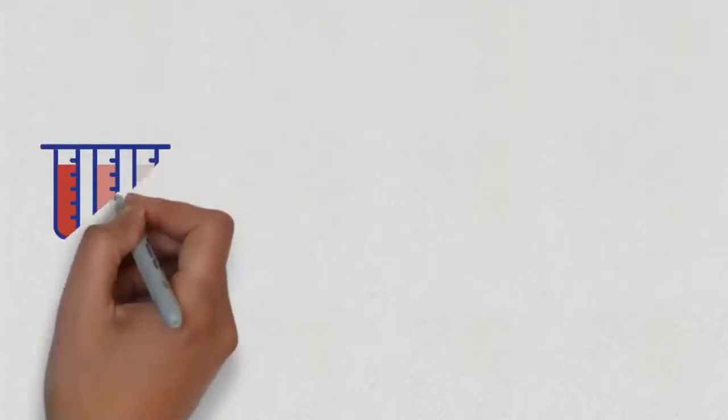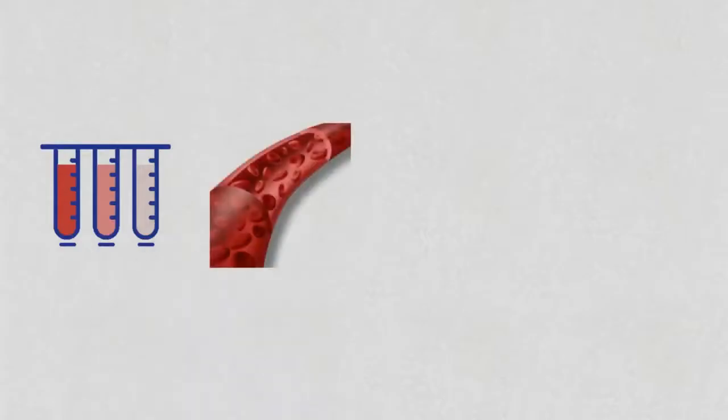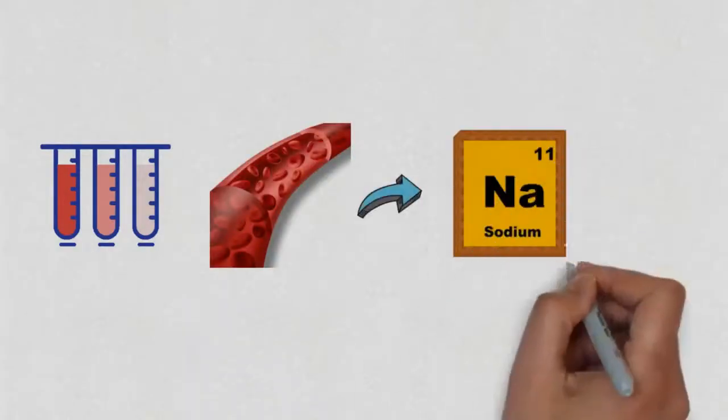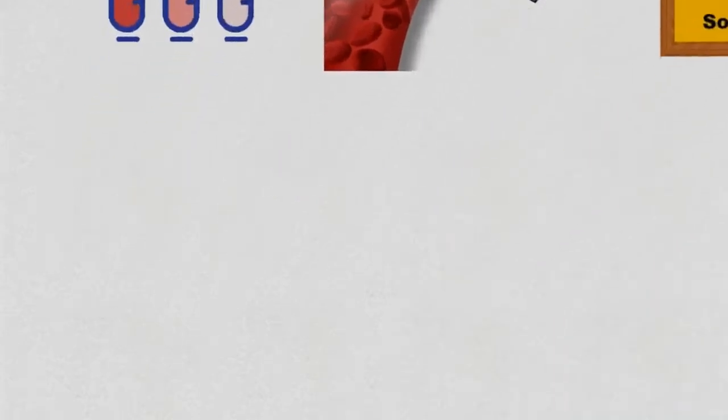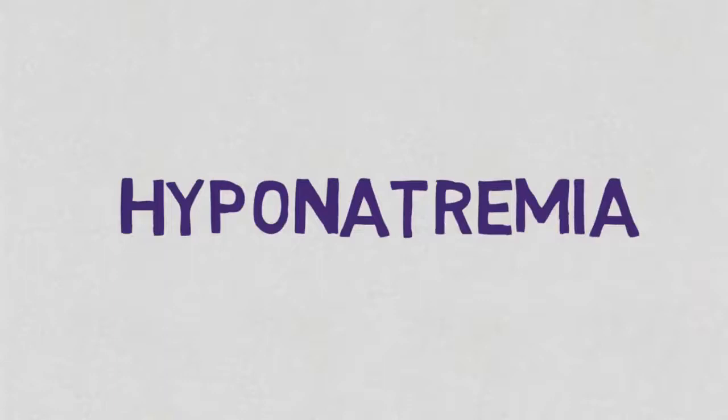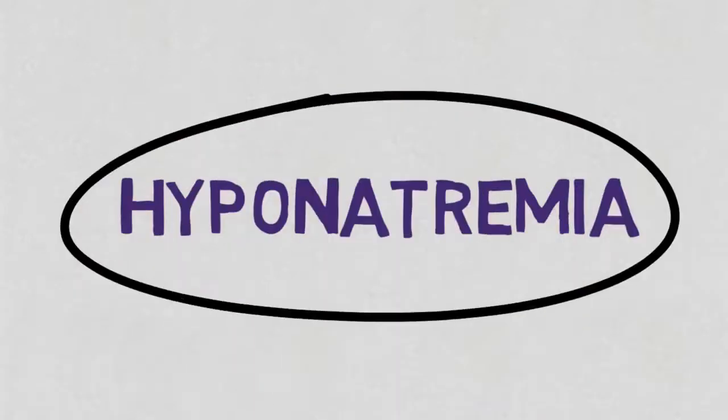This amount of water can dilute the electrolytes in your blood, especially sodium. When sodium levels fall below 135 millimole per liter, it is called hyponatremia and that can be serious.